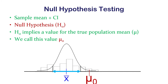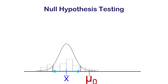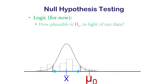Our confidence interval is based on our data; the null hypothesis is not — we specify that before we collect any data in theory. The logic we're going to use: how plausible is this null hypothesis value, mu-zero, in light of our data?